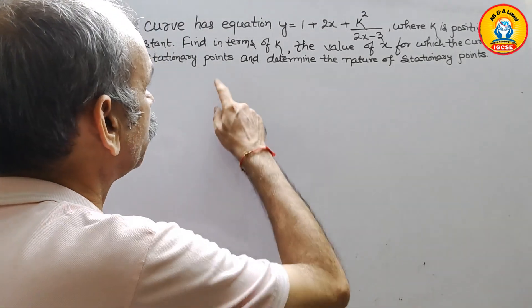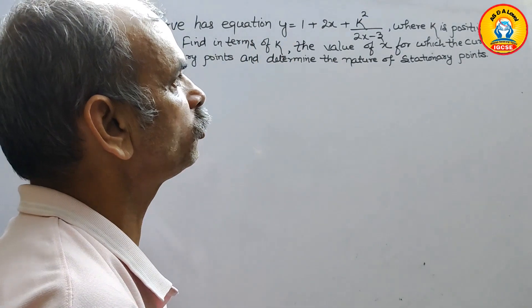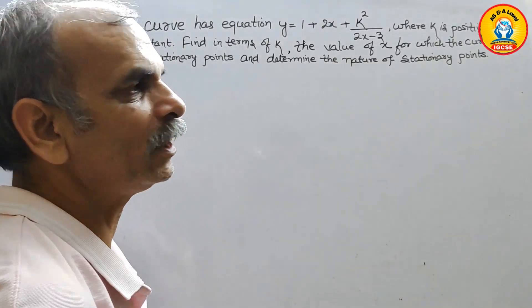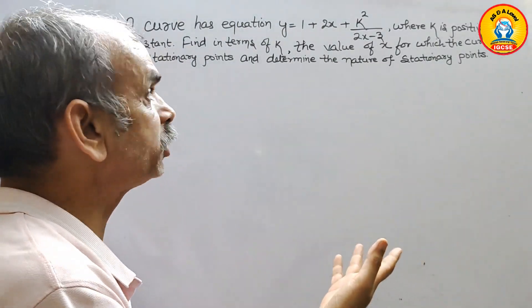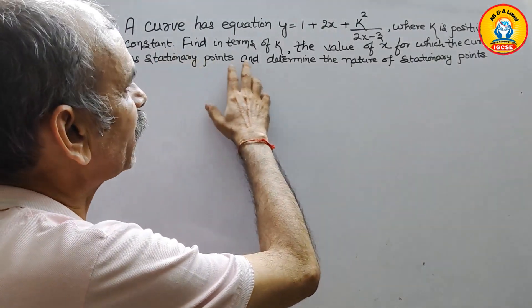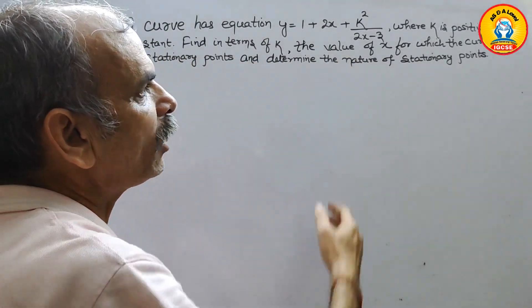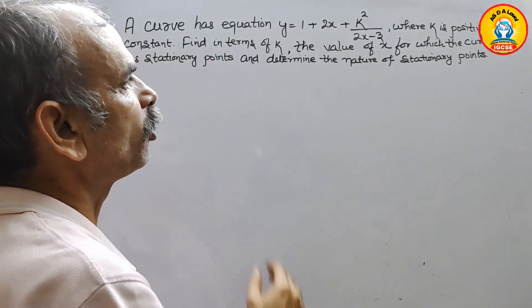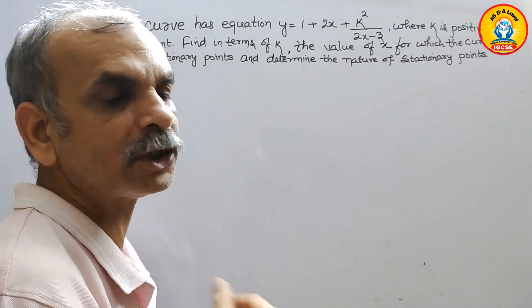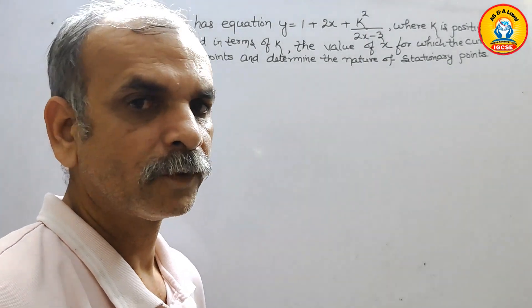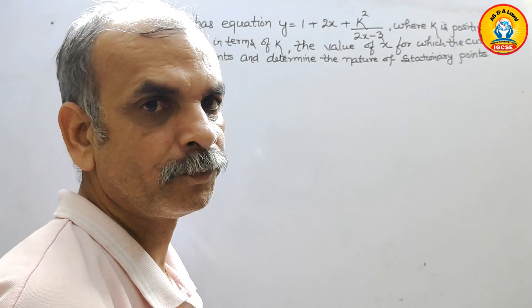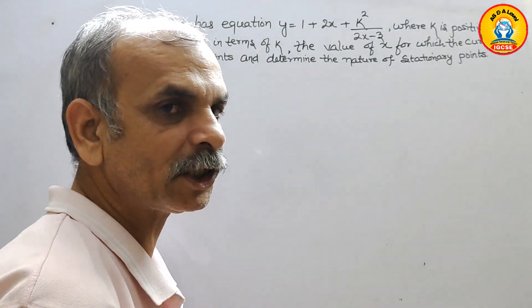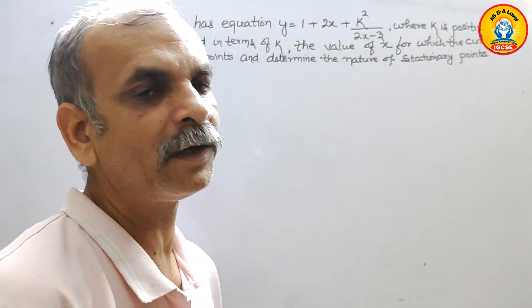A curve has equation y = 1 + 2x + k²/(2x - 3), where k is a positive constant. Find in terms of k the value of x for which the curve has stationary points, and determine the nature of those stationary points. To find the stationary points, we have to go for differentiation.